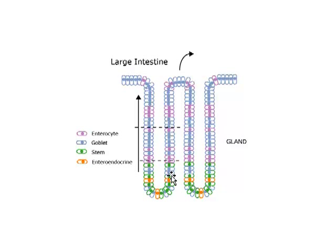As with the small intestine, division of the stem cells results in cells which largely migrate upward and can become either enterocytes or goblet cells. When they reach the surface, these cells are shed to the exterior. Between the glands is some connective tissue, but this isn't very apparent because the glands are so tightly packed. The key function in the large intestine is to absorb water and to secrete mucus, which helps lubricate the passage of the progressively more solid fecal material as it moves toward its storage site in the rectum.